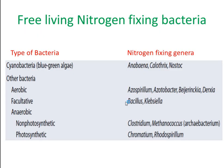Free living nitrogen fixing bacteria can be categorized into various groups. The first group is cyanobacteria, which includes Anabaena, Calothrix, and Nostoc. The second group is aerobic bacteria, which includes Azospirillum, Azotobacter, Beijerinckia, and Derxia, or facultative aerobic bacteria like Bacillus or Klebsiella. Anaerobic bacteria include non-photosynthetic forms like Clostridium and Methanococcus, and photosynthetic forms like Chromatium and Rhodospirillum.